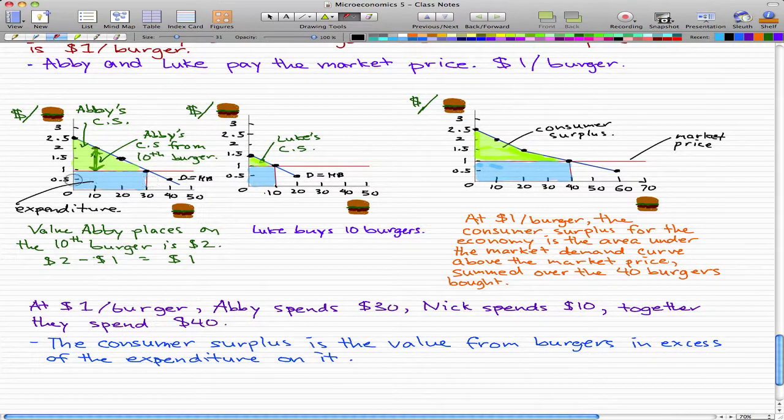So this blue part is the part that Abby has to pay. Abby would have to pay $1, the market price, for her burgers. And that is the blue part. But then she values her burgers at, well, she values her 10th burger at $2. But at the current market price, she only has to pay $1 for the burger.